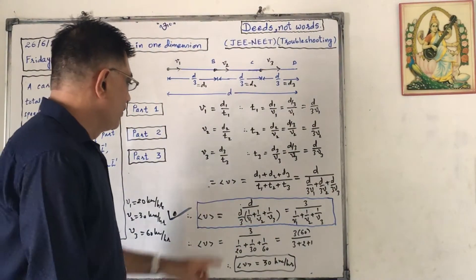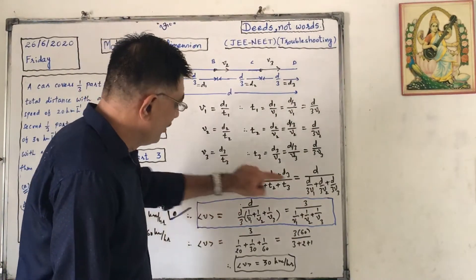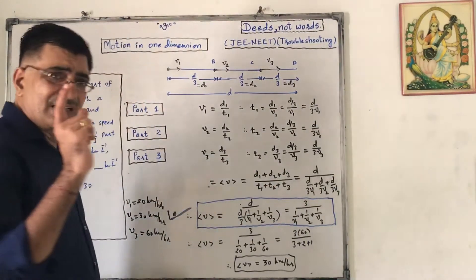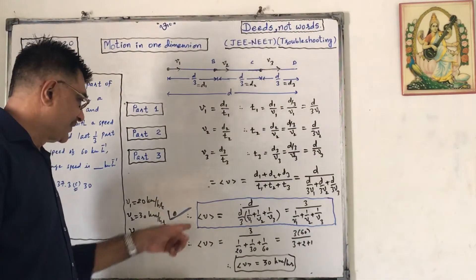So D by 3 we can take common in denominator. So this D and D will be cancelled, and this 3 will go in numerator. I was telling you I will give you a quick method, that is this.